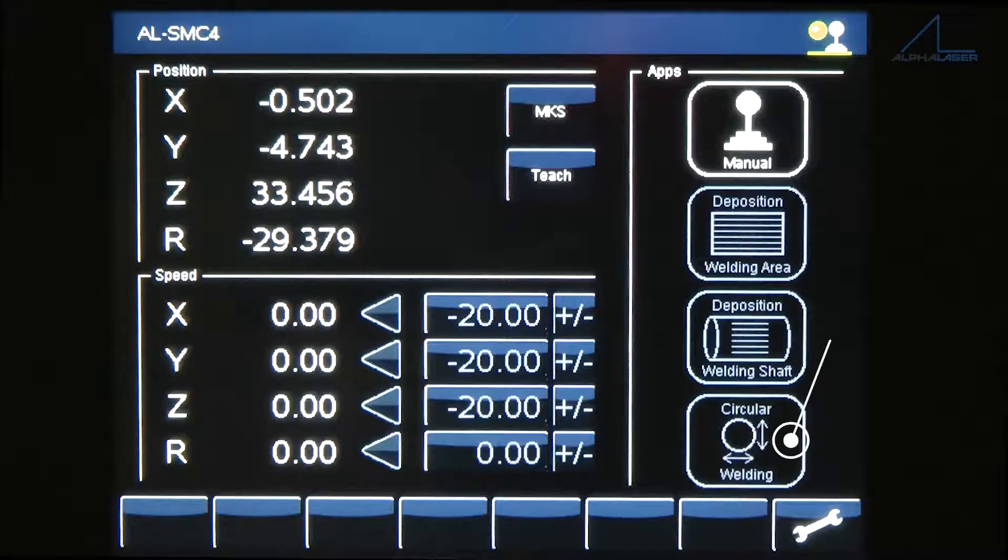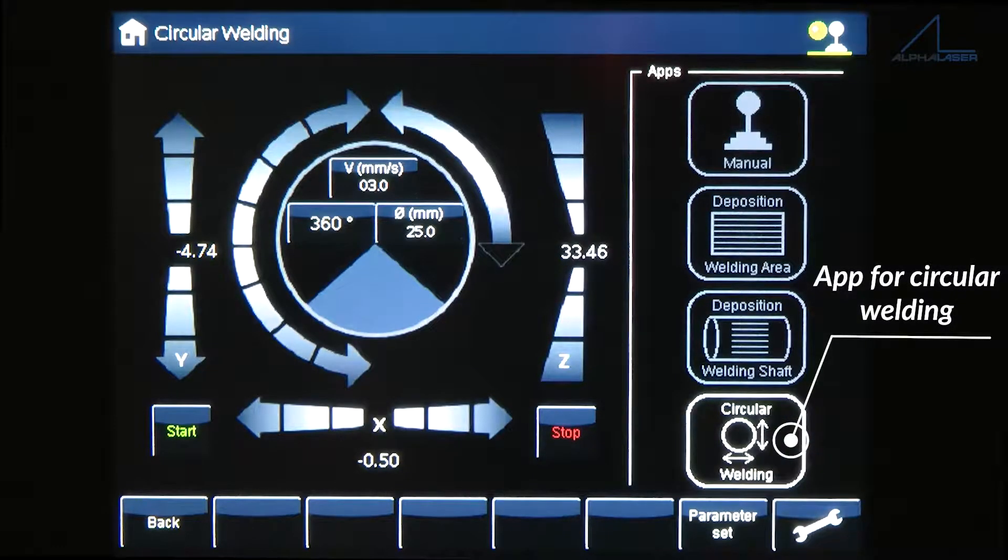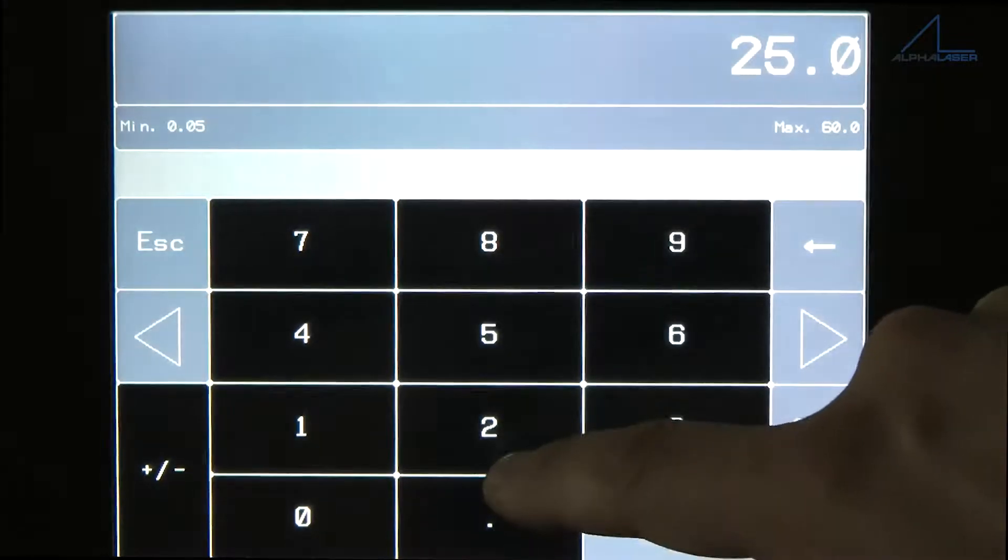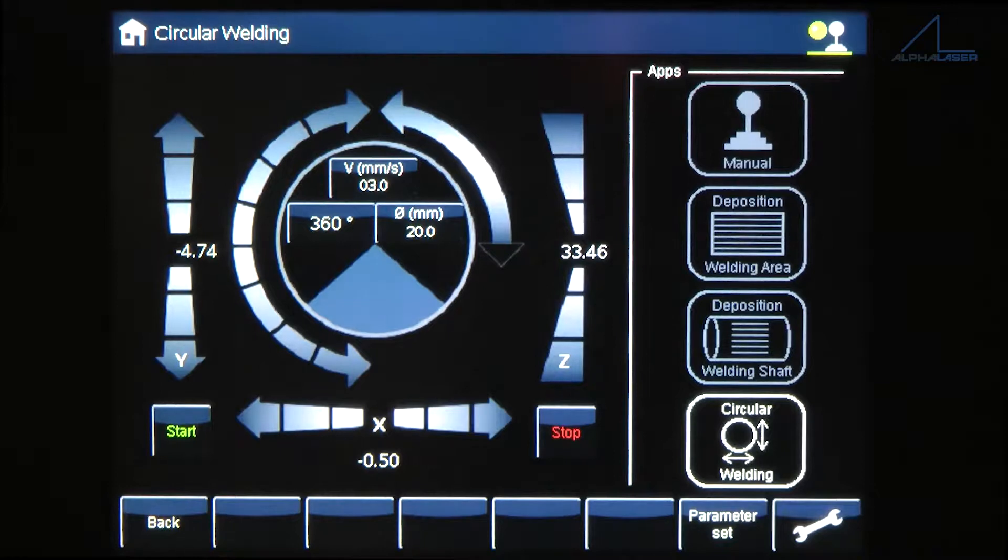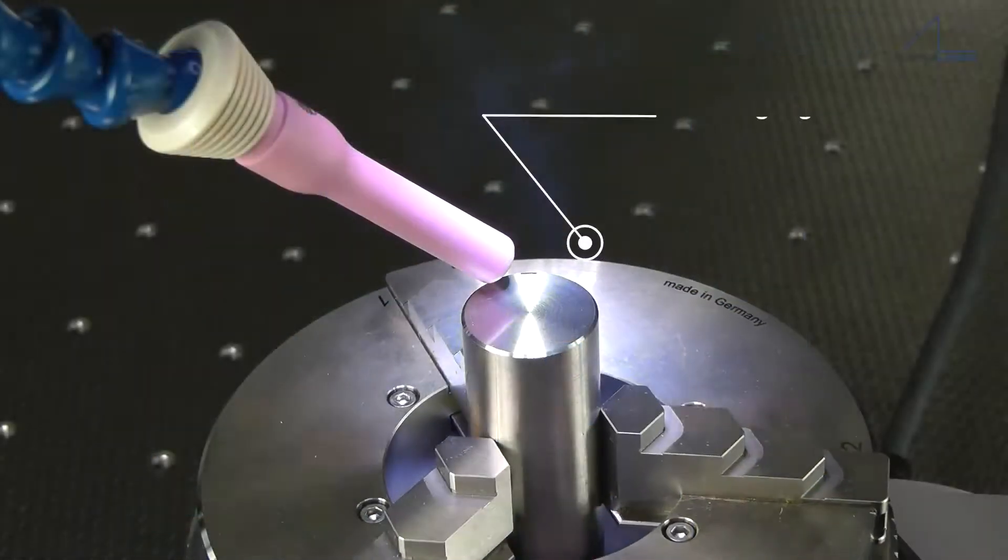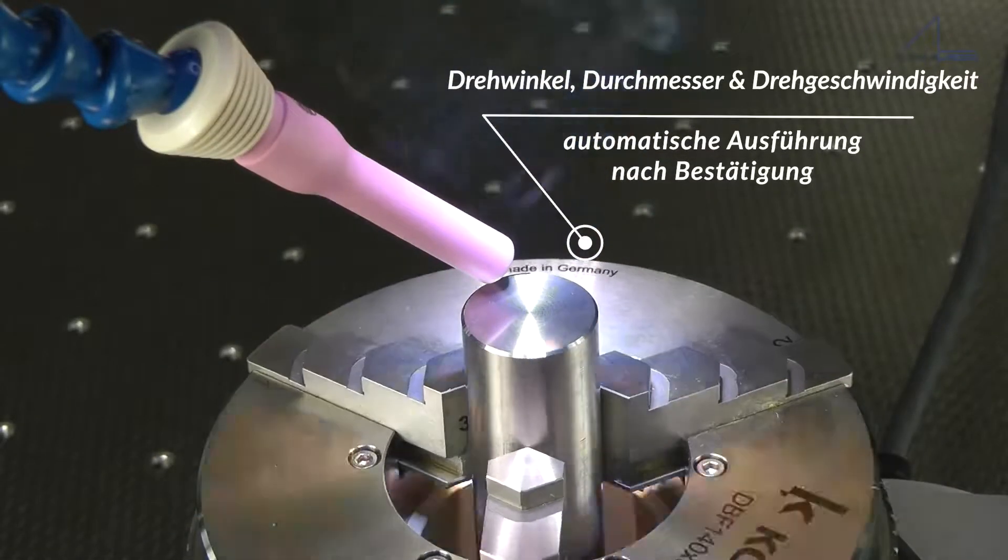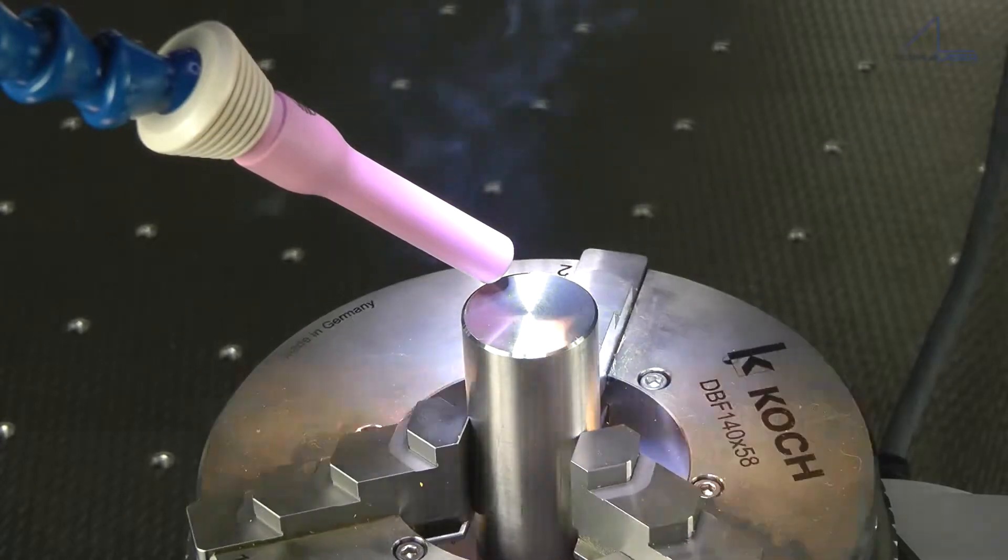Within the app for circular welding, the angle of rotation, the diameter of the component, and the speed of rotation can be set so that the laser system performs the welding automatically. This feature can be used for example to weld covers for sensors.